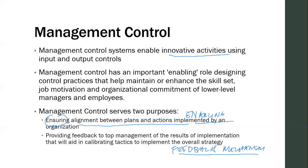If you're able to track what's happening on the ground, it can be an input on how you can recalibrate strategies. For example, if strategy A is not working, you can tweak it in the second or third quarter of the year. Without a feedback mechanism, you'll be straying for a long period of time without noticing. So management control also serves that feedback mechanism purpose.